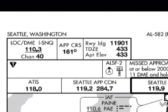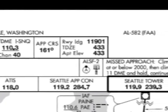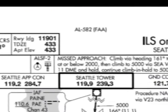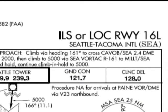It also lists the touchdown zone elevation of 433 feet and our airport elevation of 433 feet also. The header identifies the type of the approach, which in this case is an ILS or localizer approach to runway 16 left, and of course the airport name, which in this case is Seattle.